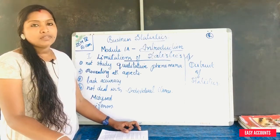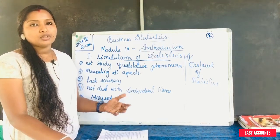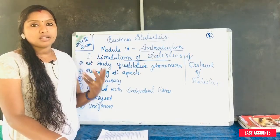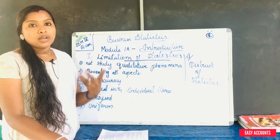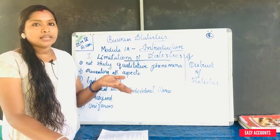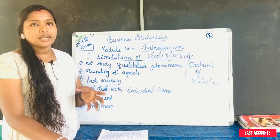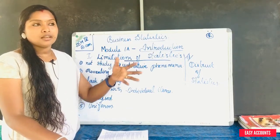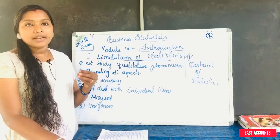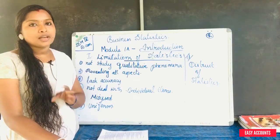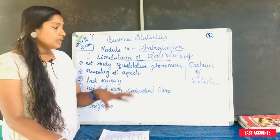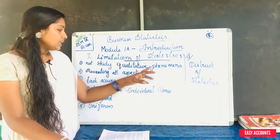For example, qualities such as intelligence, courage, honesty, and loyalty are qualitative in nature. That is why we have to convert these qualitative attributes into numerical values to apply statistics to them.